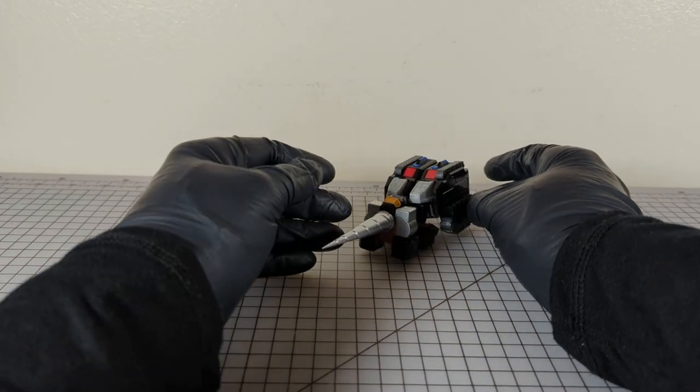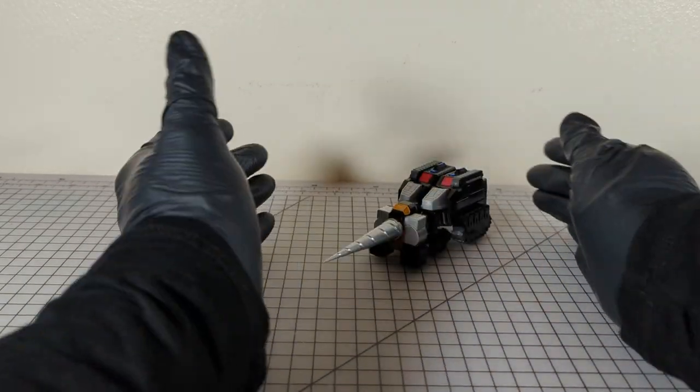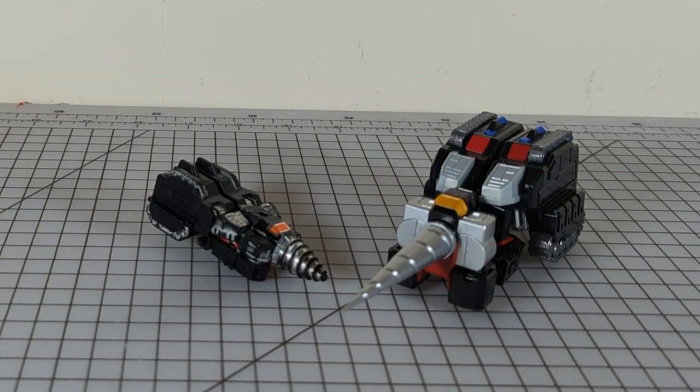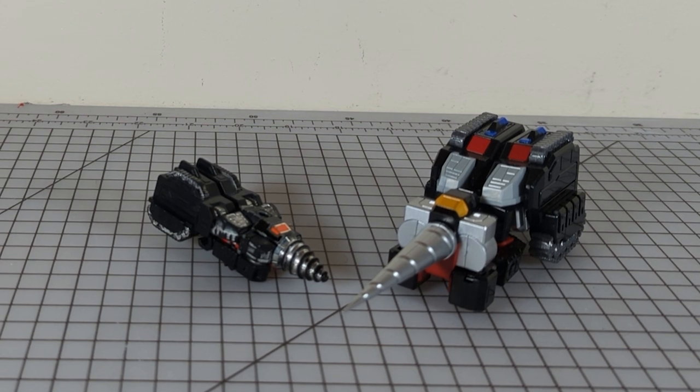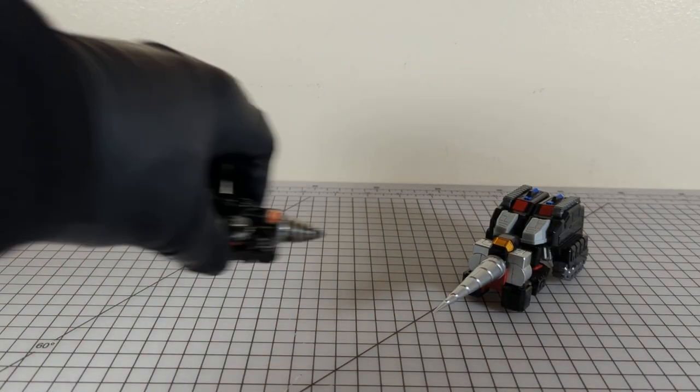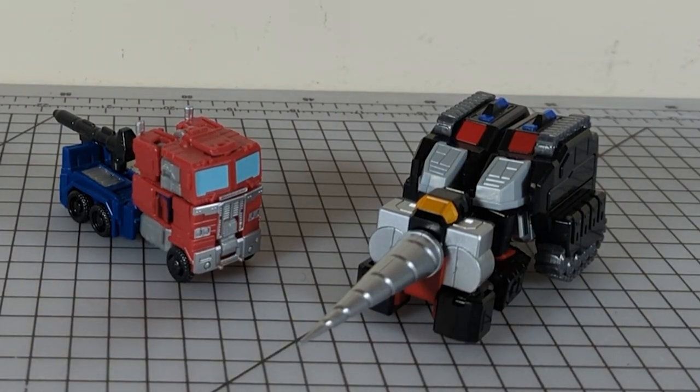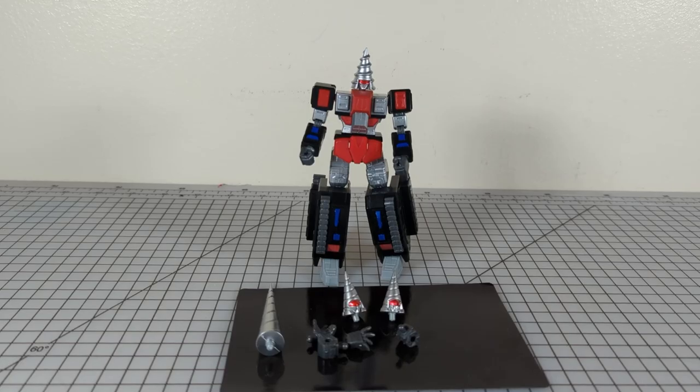So there he is in vehicle mode. There he is next to what's left of my G1 and Core Class Optimus Prime. So there he is, Machine Robo One Rod Gorilla, aka Screw Head.